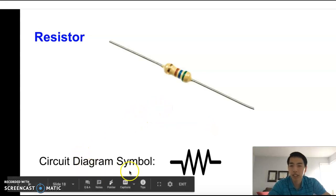The diagram symbol for that is zigzags. Just a few zigzags, and that's a resistor.